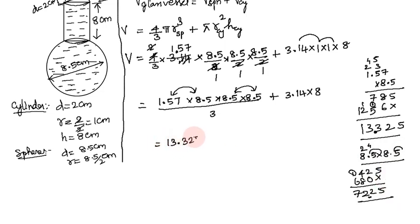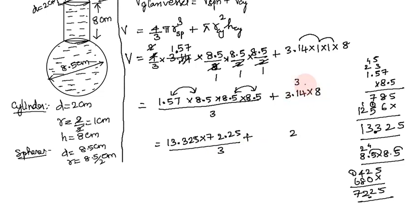Now computing 13.325 × 72.25 divided by 3. Multiplying step by step: 13.325 × 72.25, carrying digits through the multiplication. The two-digit decimal result is approximately 962.73, giving 962.73 ÷ 3 ≈ 20.91 after rounding.